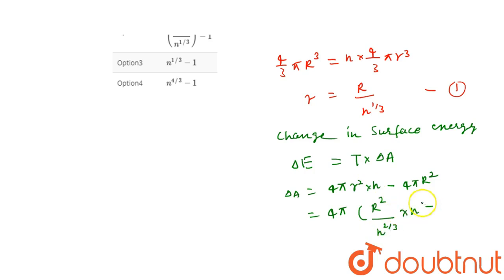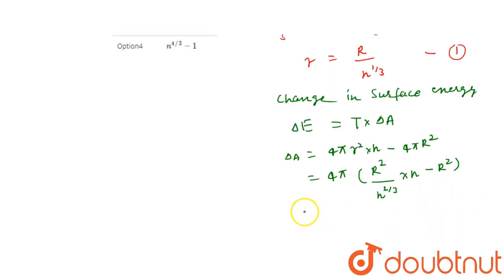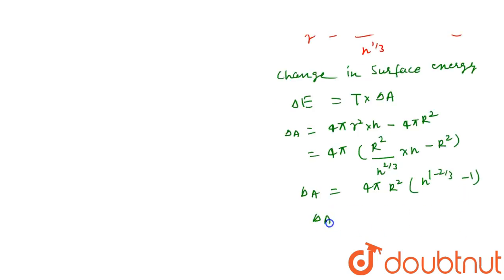So finally, delta A value from here is 4 pi R square taken common. We get n to the power 1 by 3 minus 1. After further simplification, we get delta A equals 4 pi R square times (n to the power 1 by 3 minus 1).